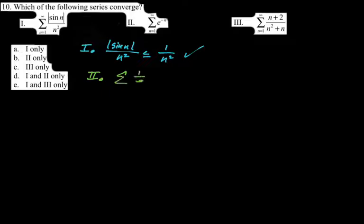Number two is actually geometric. I like my geometric series to look like geometric series, so I'll rewrite e to the negative n as one over e to the n. This is geometric with r equals one over e. One over e is less than one, which means this converges.